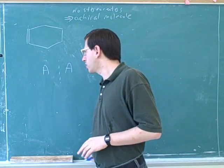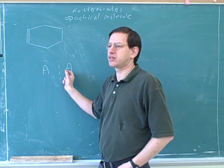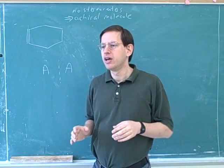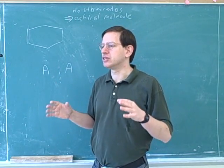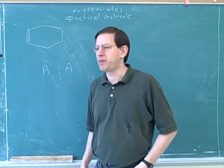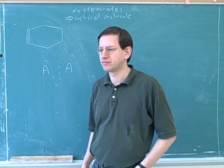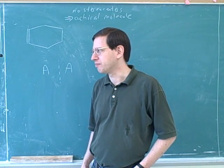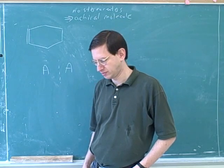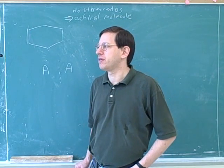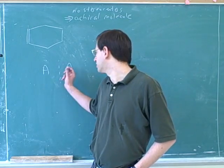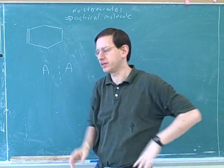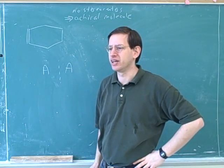We don't need different words for things that are the same as their mirror image, but we do need words to describe mirror images that are not the same — and that word is enantiomers. Enantiomers are a pair of mirror images that are not the same molecule. The way we test whether they're the same is by asking whether we could superimpose one on the other. You cannot superimpose your left hand on your right hand, so your right and left hand are enantiomers.